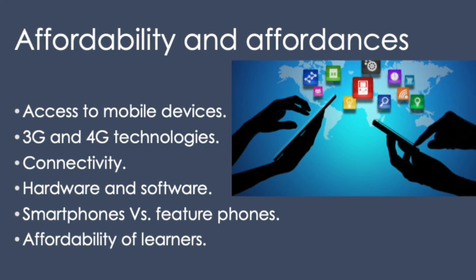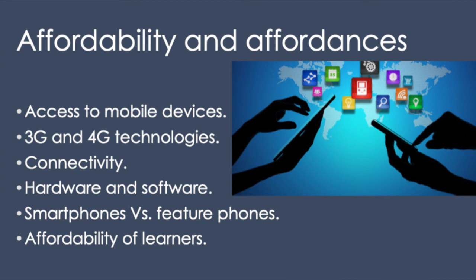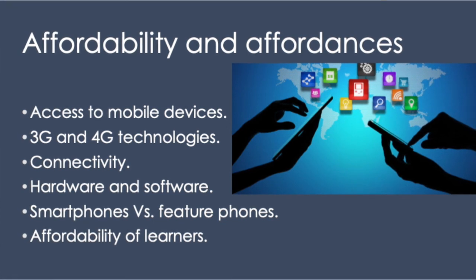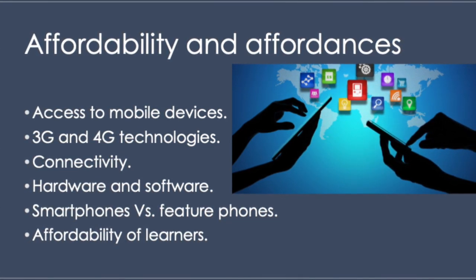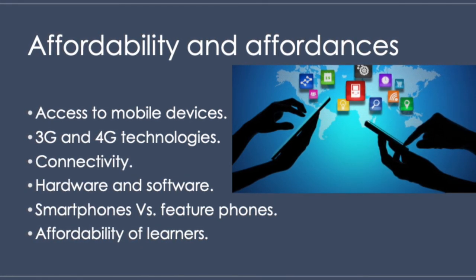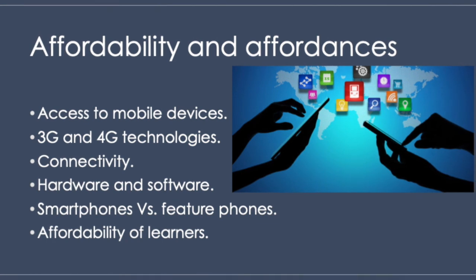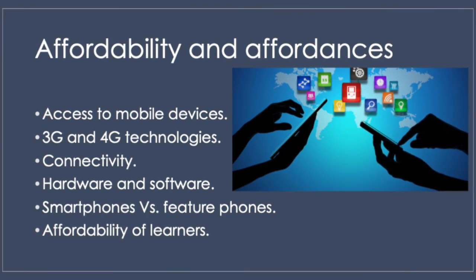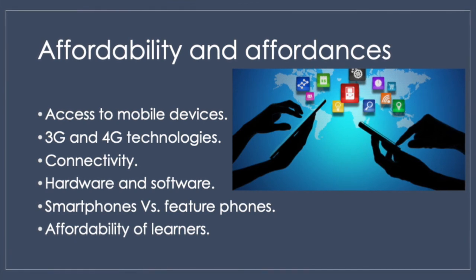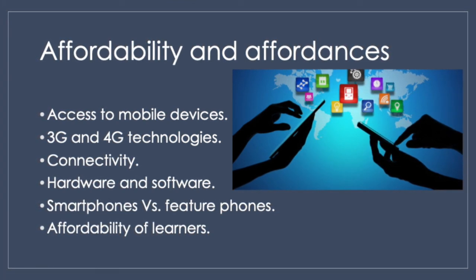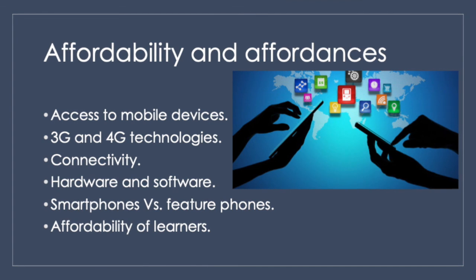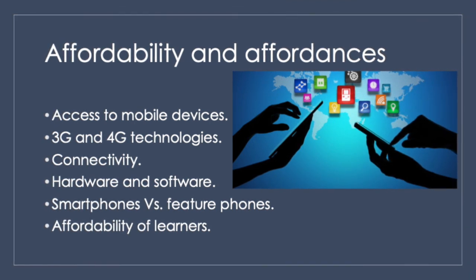Successful practices in MALL also depend on the affordability and affordances of the implementations. Affordability means access to mobile devices and connectivity depending on the regions and countries, as well as average income. While 3G and 4G technologies are expanding worldwide, 2G networks are still in use in developing countries. The higher the level of connectivity, the higher the affordances of the digital gadgets. Affordances means the sophistication of hardware and software of the devices — the affordances on smartphones are way better than in feature phones, with more actions and activities possible.